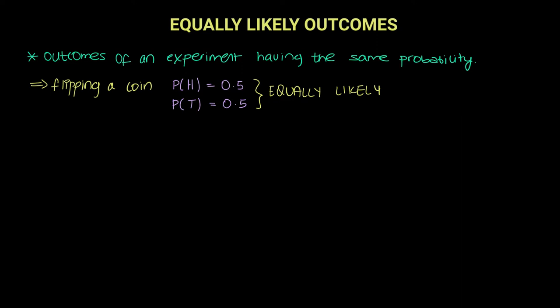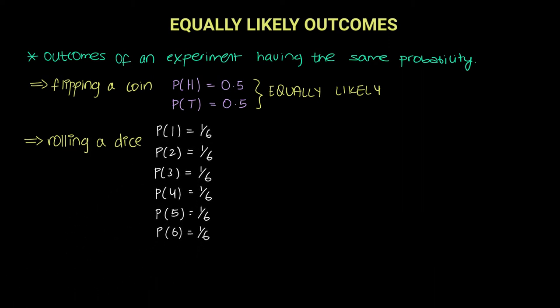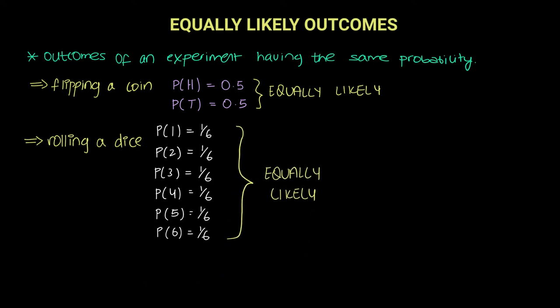The other experiment we were looking at was rolling a dice. The same case goes here, where each individual number from 1 to 6 has the same probability of landing on either side of the dice. So they had equally likely chances of landing on a 1, 2, 3, 4, 5, or 6. The probability of each outcome is the same — 1 upon 6. And therefore, this experiment is also equally likely.